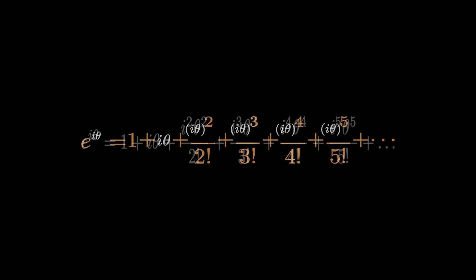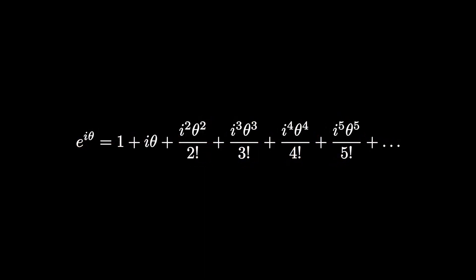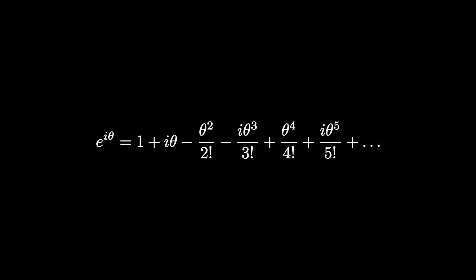Now, let's carefully simplify this. Remember that i² equals -1 always. Alright, now that we simplified it, let's group the real terms together and the imaginary terms together.